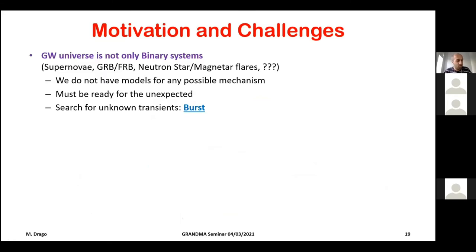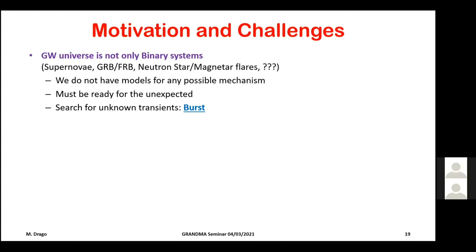Let's go into detail about burst searches. The motivation is that so far we have only detected binary systems, but the gravitational wave universe is not limited to them. Possible sources include supernovae, gamma-ray bursts, fast radio bursts, neutron star flares, and magnetars. Since we don't have complete models for these mechanisms — for a supernova, even after months of calculation you get a signature for one particular case, out of a huge range of possibilities — we must be ready for everything.